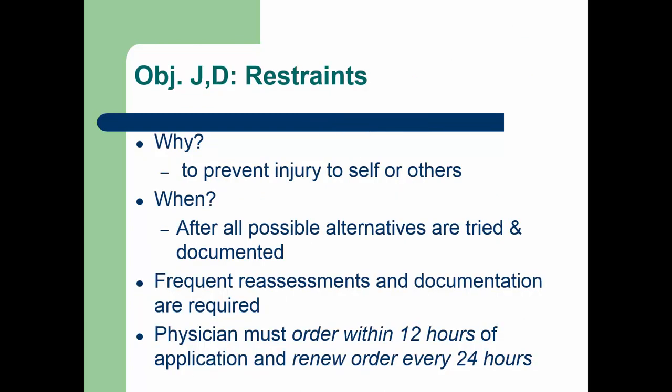Restraints are used to prevent injury to the patient or other people, but keep in mind they can also create a safety hazard, especially if applied incorrectly. For example, restraints can be a strangulation hazard if a roll belt, lap belt, or vest is not on correctly, or an entrapment hazard if side rails are used incorrectly and the patient slips through. They should only be used after every other possible alternative has been tried and documented, because of the risks of serious complications.